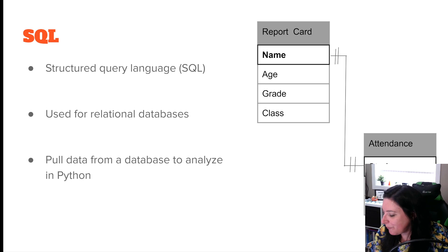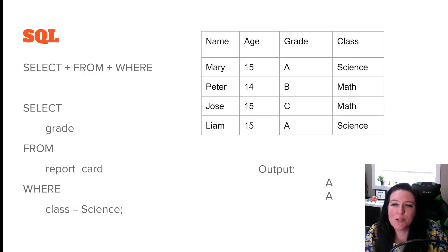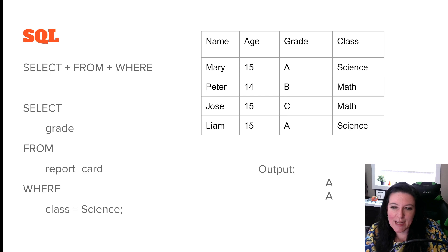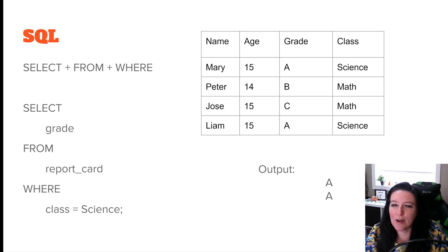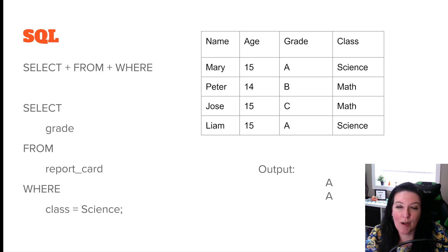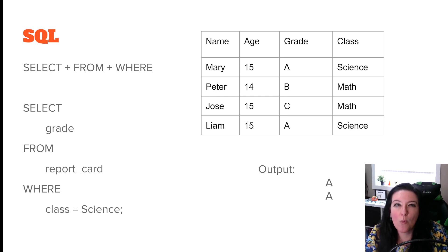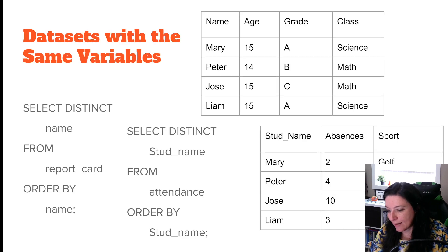We could use SQL to pull information. The key terms in SQL are SELECT, FROM, and WHERE. For example: SELECT grade FROM report_card WHERE class = 'science'. This goes to the report card table and pulls grades wherever the class equals science. Mary and Liam both have an A in science, so the output would be A and A. You can select multiple columns — like name and grade — but you must always specify what table it's coming from, then add WHERE for any conditions.